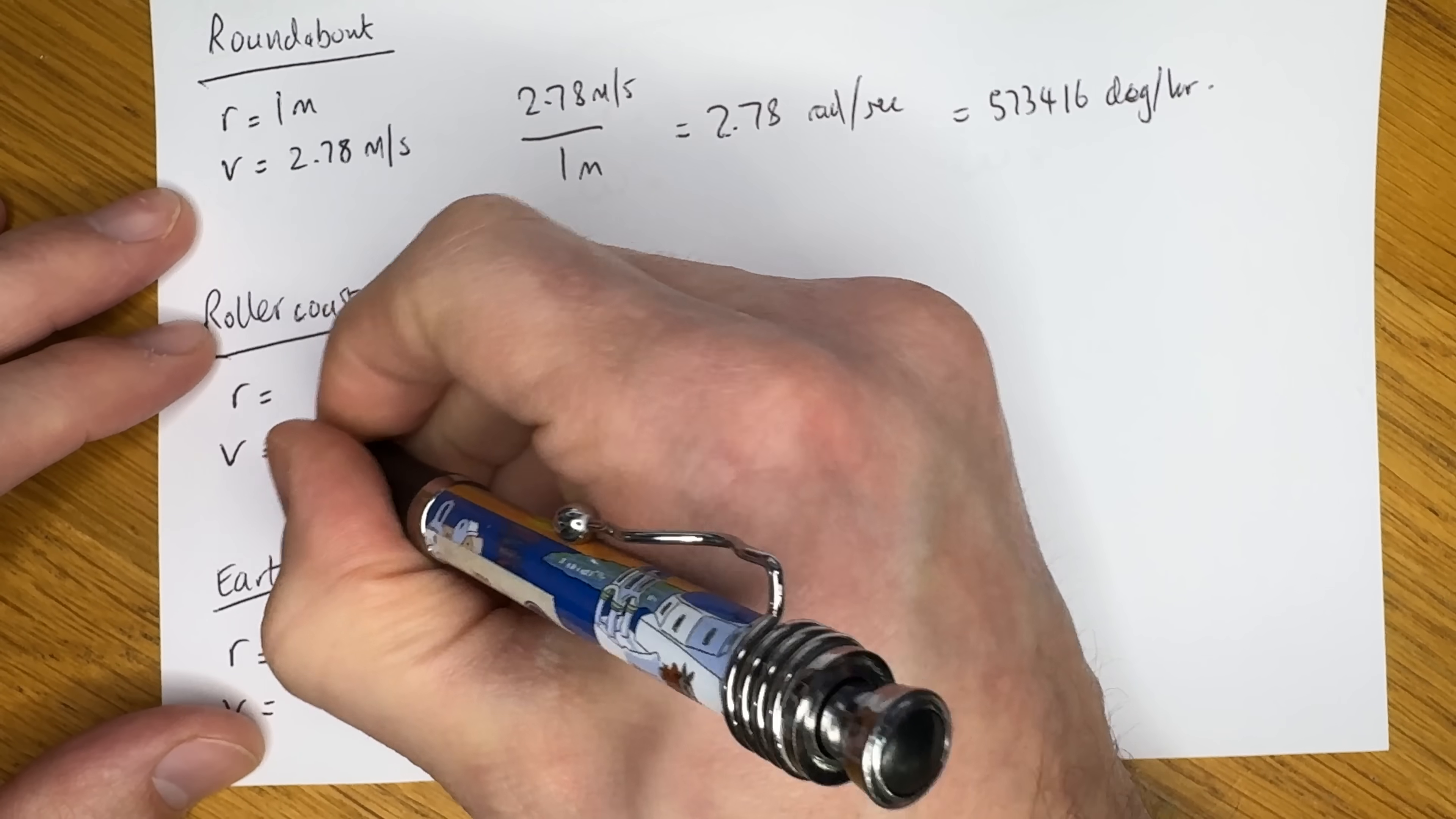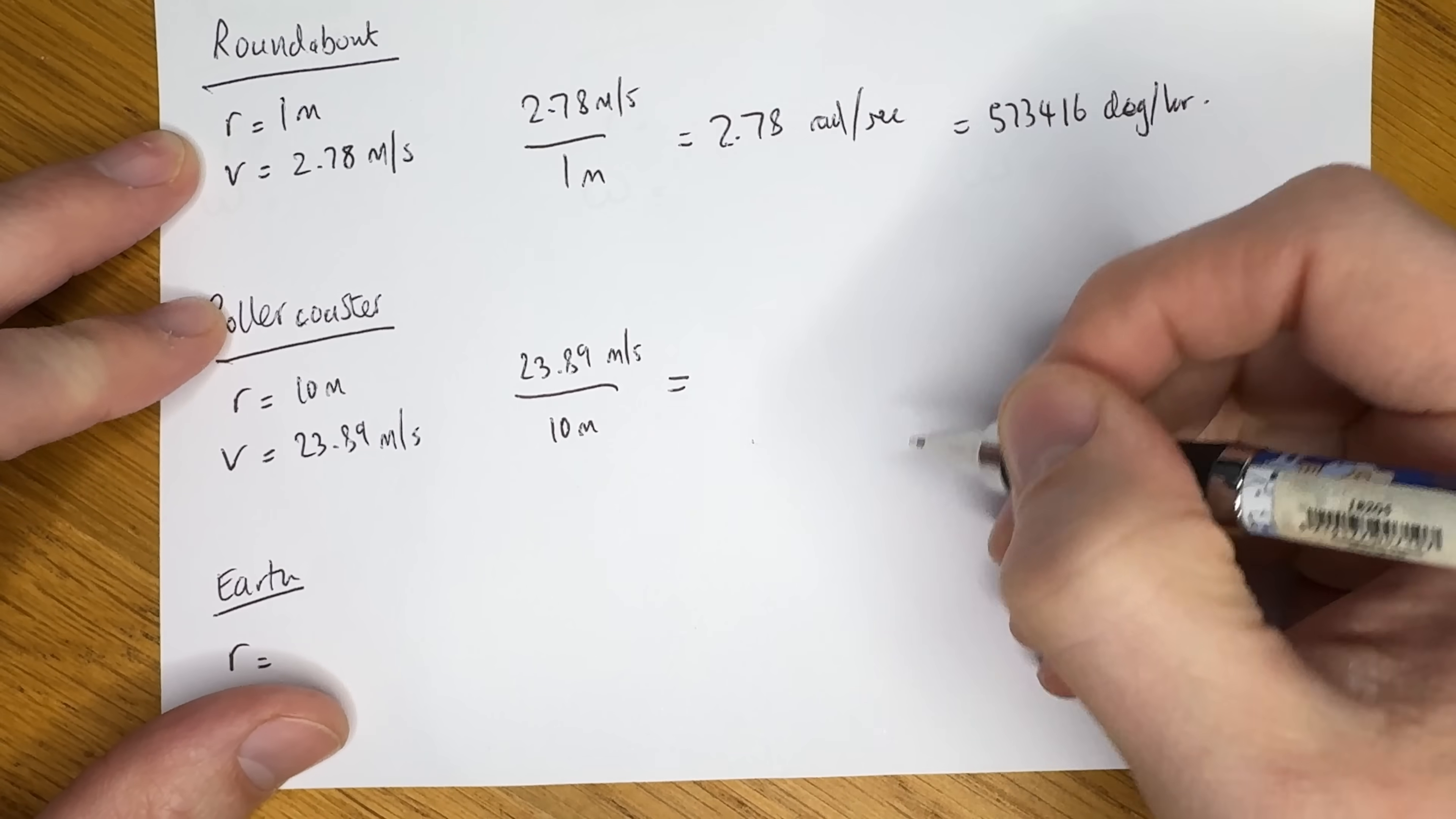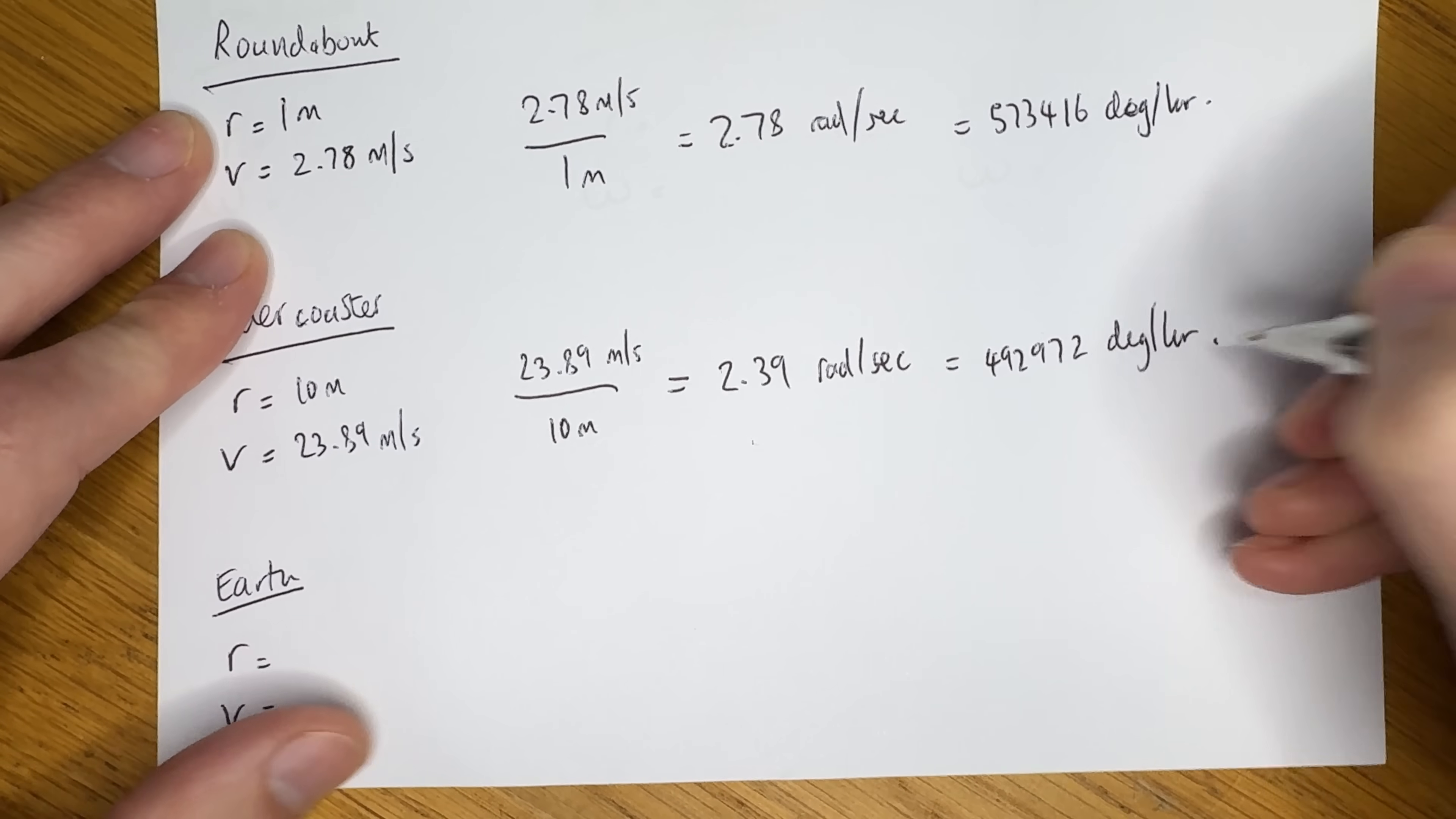Let's move on to the roller coaster, which would be when it's turning a corner, let's remember. That has an angular speed of 23.89 metres per second. We divide that by, well, it's difficult to get a radius here, but if we imagine the curve is part of a full circle, we can estimate a radius of around 10 metres, depending on the roller coaster, of course. And for that, we get an angular speed of 2.39 radians per second, or 492,972 degrees per hour.